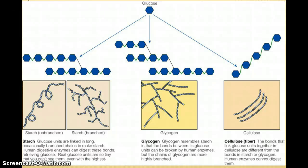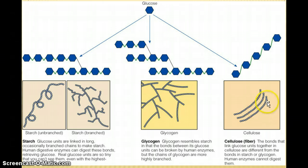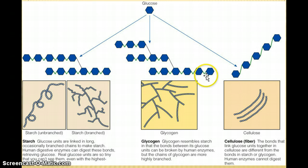Now we are going to talk about fiber. We just got done looking at starch and glycogen, which glucose is the building block. Glucose is also the building block for fibers. Cellulose fiber, which is an insoluble fiber you can see here, has glucose as the sole building block. It is very linear, so it can pack together and doesn't let a lot of water in, which is why it's insoluble. Comparing the bonds between the glucose molecules of glycogen and starch, the bonds look different here in cellulose.